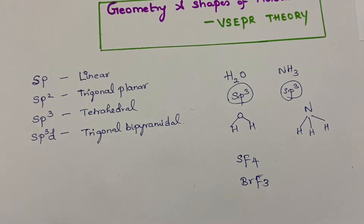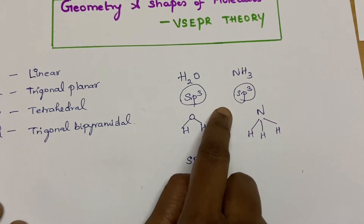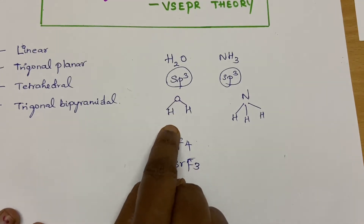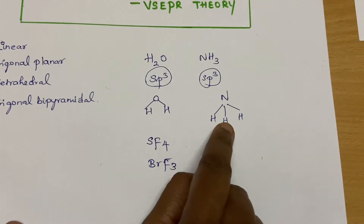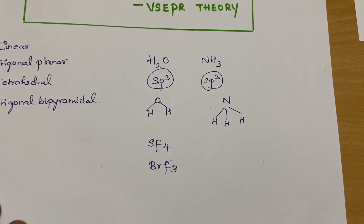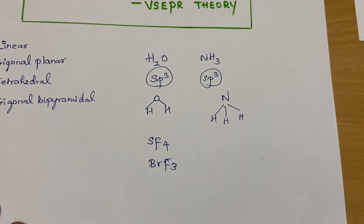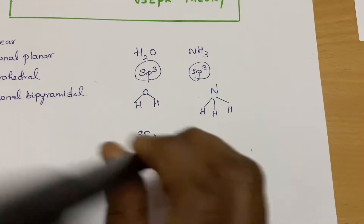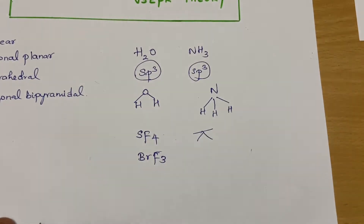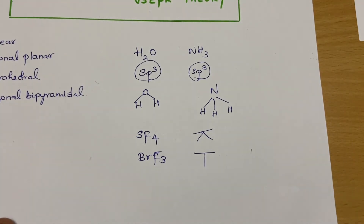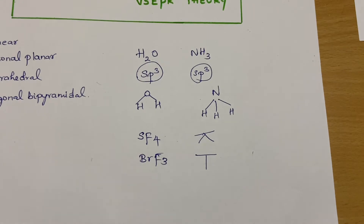For example, water and ammonia both have the same hybridization SP3, but the shape of the water molecule is bent whereas for ammonia it is pyramidal. How can that be? And what is the shape of SF4? It is see-saw. How come? We know only the hybridization. And what is the shape of BrF3? It is T-shaped. All these things we are going to see in a single video.